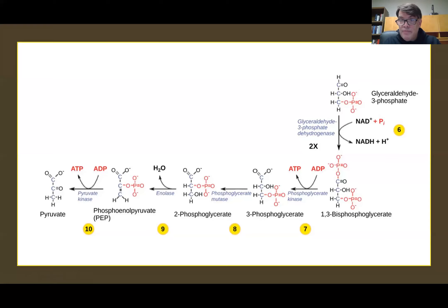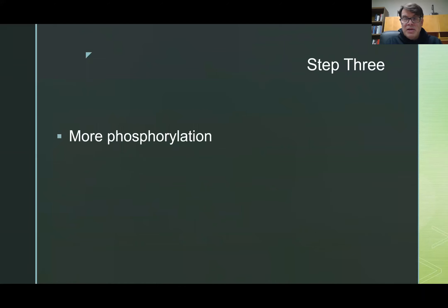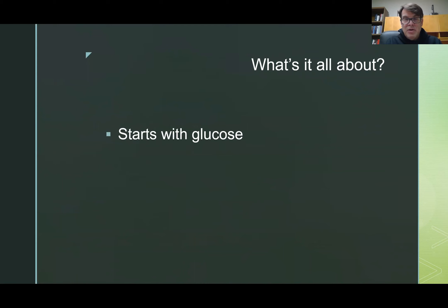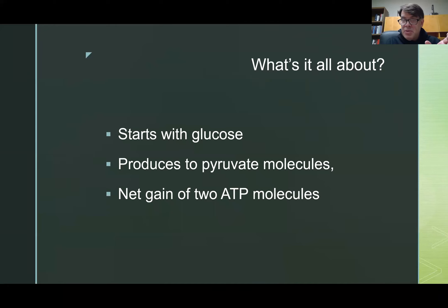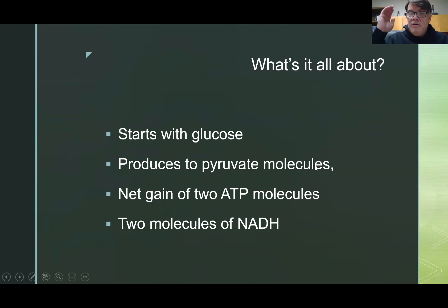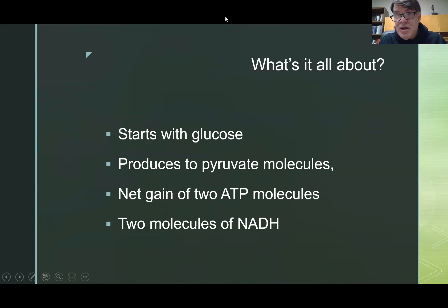I don't know how much your professor wants you to know, but let me go back to the beginning to sum it all up. Glycolysis is a process that starts with glucose and ends with pyruvate molecules. It has a net gain of two ATP molecules because of the burping of the phosphates, and it ends up with two molecules of NADH, which is an energy form that cells use. That's basically what glycolysis is all about — from glucose to pyruvate. I did my best for tonight and we'll be back maybe tomorrow with the citric cycle.